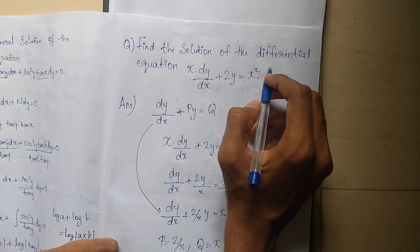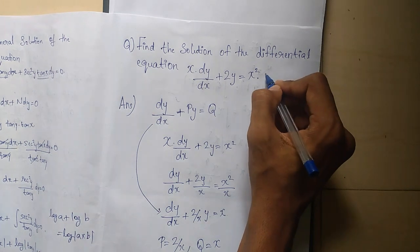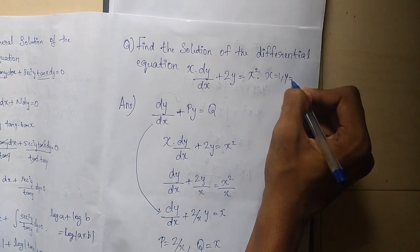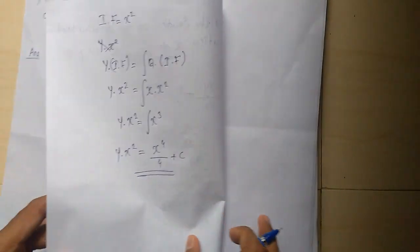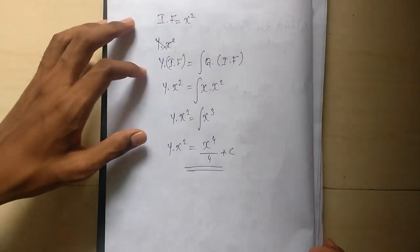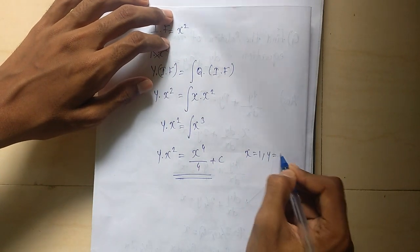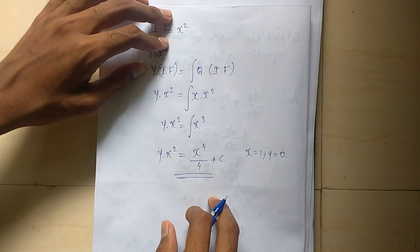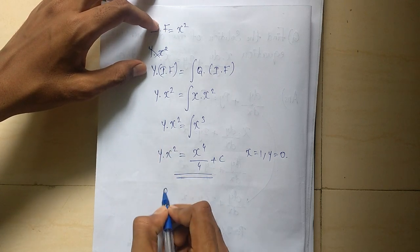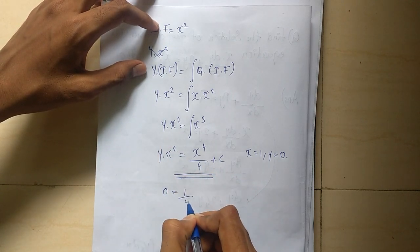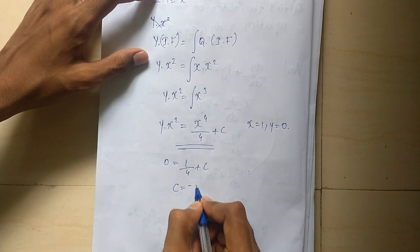We have two hints. We substitute x equals 1 and y equals 0. So 0 equals 1 raised to 4 by 4 plus c, giving c equals minus 1 by 4.